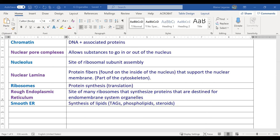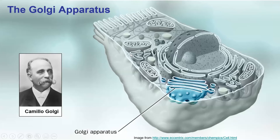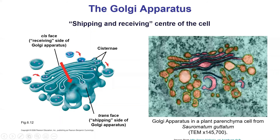The next organelle to talk about is the Golgi apparatus — named after a guy named Golgi. You may know it as the Golgi body or Golgi apparatus. It looks kind of like a funny stack of blobby pancakes. This is kind of like the shipping and receiving center of the cell: we make proteins in the ER, and those proteins get sent to the Golgi, which processes them and sends them to other places — like bringing a parcel to the post office where they sort things and send them where they're supposed to go.